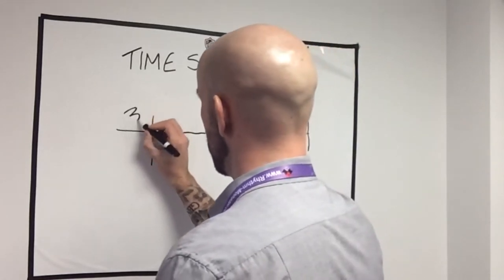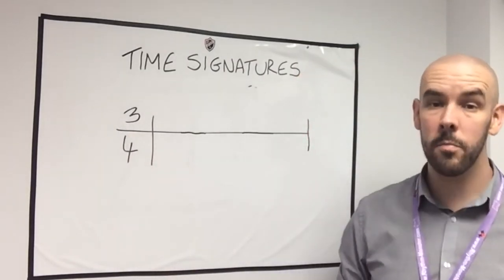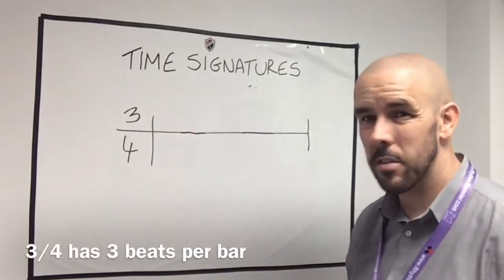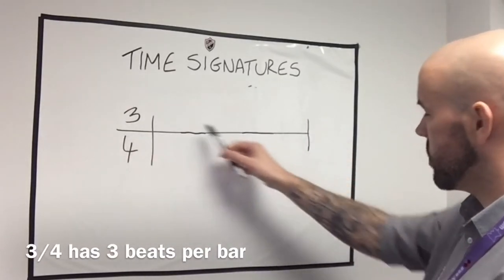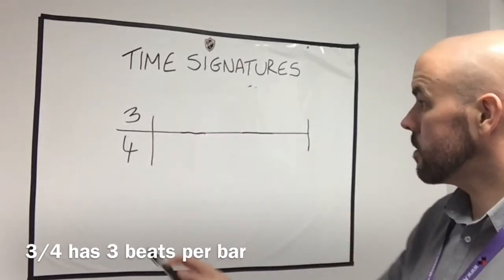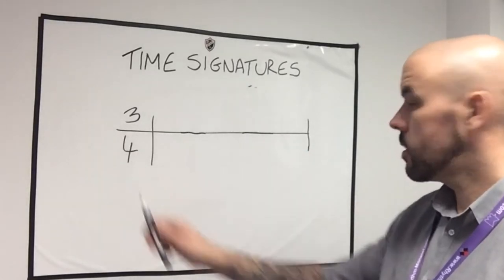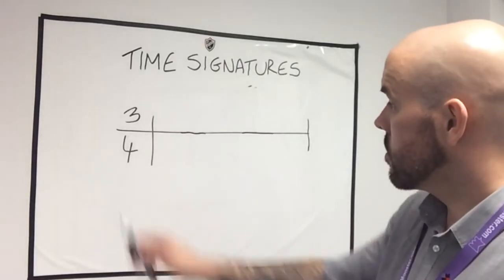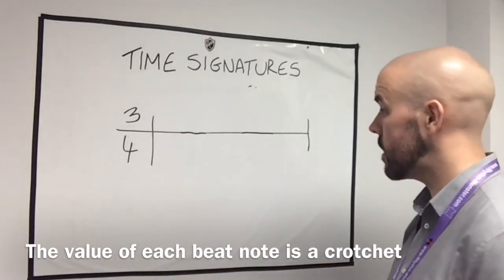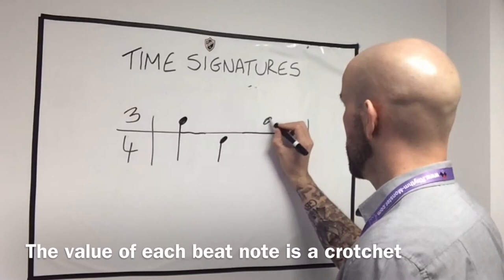Let's go for 3-4. The first number tells us the number of beats per bar, so there are going to be three beats in this bar. Remember the stave, two bar lines, and the bar is the space between them — so in every single bar there will be three beats. I need to know the value of the beat notes — the bottom number is four, so it's quarter notes: three crotchets per bar. There's one, two, three.